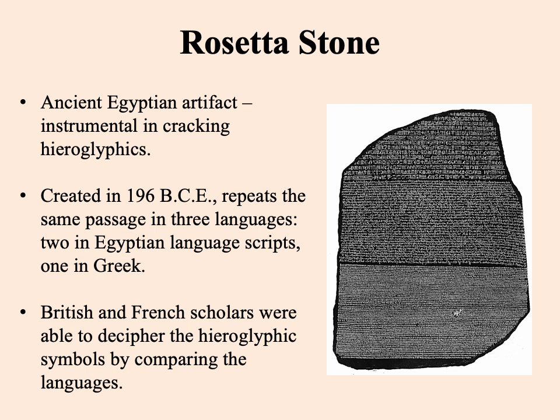By the way, the language-learning company Rosetta Stone takes its name from the artifact, not the other way around. The Rosetta Stone was discovered by a French soldier during the French occupation of Egypt at the very end of the 18th, beginning of the 19th century — this was under Napoleon. This soldier found the stone near a village called Rosetta, hence the name. It showed a royal decree issued during what's known as the Hellenistic period of rule in ancient Egypt.